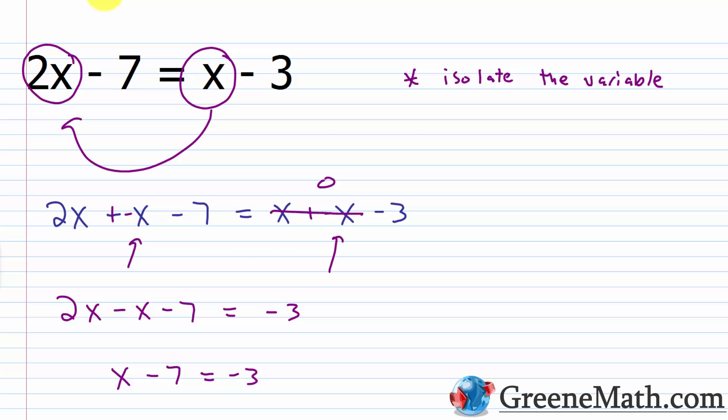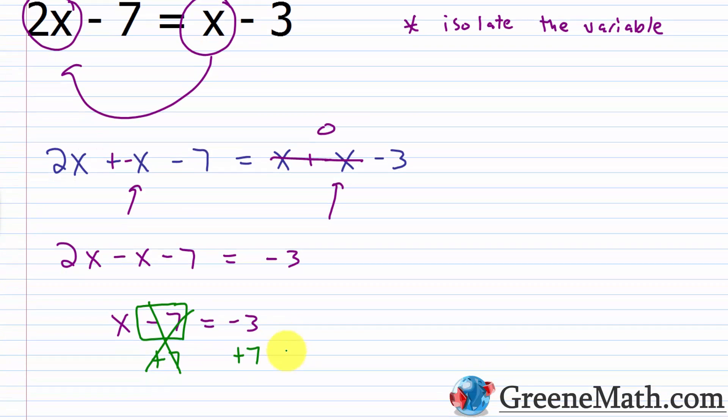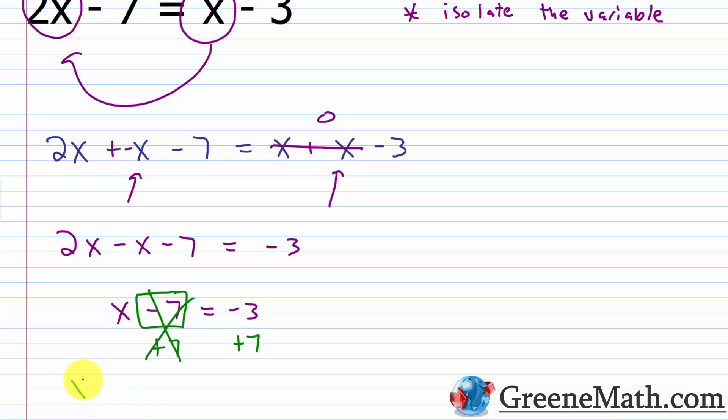Now all I need to do is think about the fact that negative 7 is being added to x. So I want to add 7 to each side of the equation. I'm going to do this in vertical format. I'm going to put plus 7 here and then plus 7 here. This is going to cancel. And I'm going to end up with x is equal to, over here, negative 3 plus 7 is going to be positive 4.